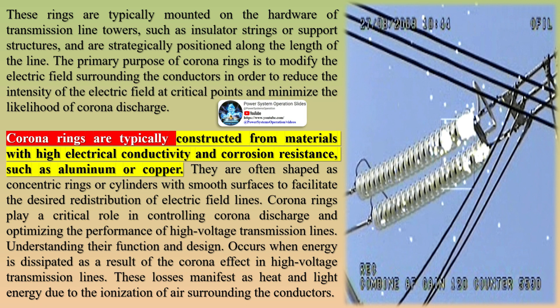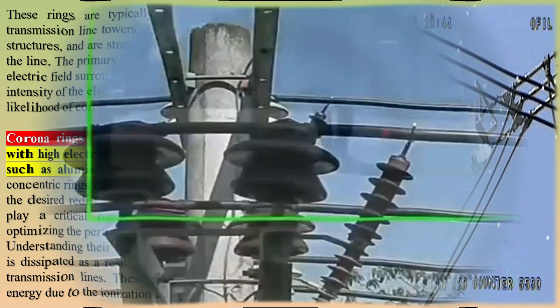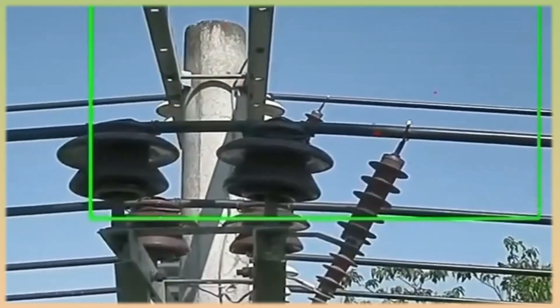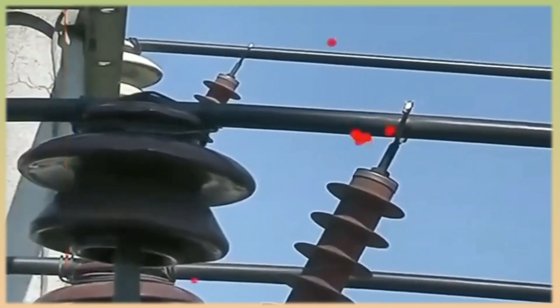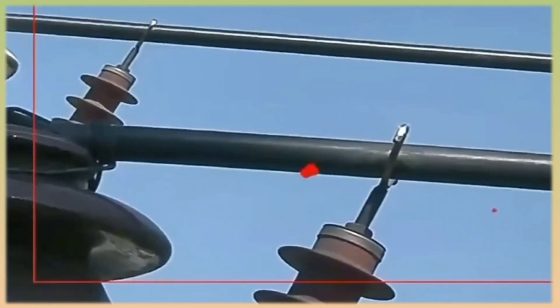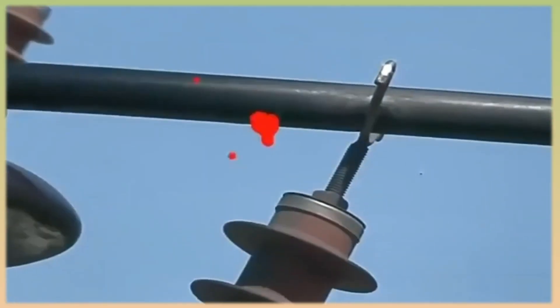These rings are typically mounted on the hardware of transmission line towers, such as insulator strings or support structures, and are strategically positioned along the length of the line. The primary purpose of corona rings is to modify the electric field surrounding the conductors in order to reduce the intensity of the electric field at critical points and minimize the likelihood of corona discharge. Corona rings are typically constructed from materials with high electrical conductivity and corrosion resistance, such as aluminum or copper, and are often shaped as concentric rings or cylinders with smooth surfaces.